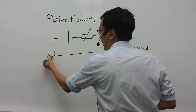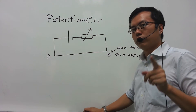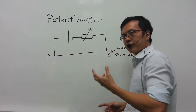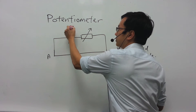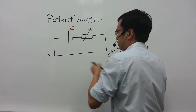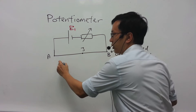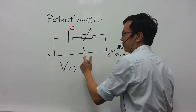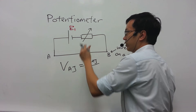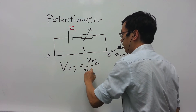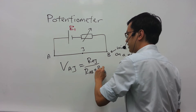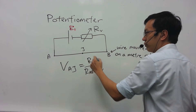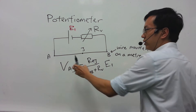Let's call one end of the wire A and the other end B. If you remember the potentiometer rule, the potential difference across any two points along this wire is going to be a fraction of the EMF E1. The potential difference across AJ will be the fraction of the resistance of AJ to that of the total resistance in this primary circuit, which is AB plus the variable resistor. Of course, if the battery has an internal resistance, then we need to include the internal resistance. This ratio multiplied by the EMF E1 will give you the potential difference across AJ.